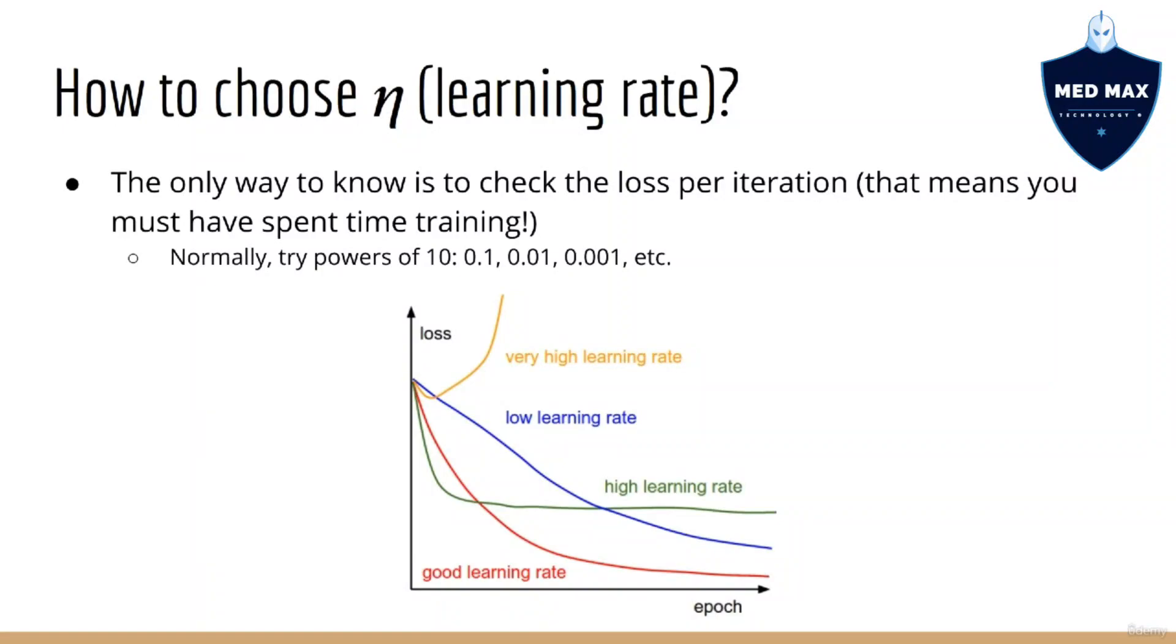As mentioned before, one way to know if your learning rate is too high or too low is to check the loss per iteration after training. This is somewhat unfortunate because training can take a long time, and you only know the result once it's done. If you use a bad learning rate and got bad results, well, you still had to wait for them.